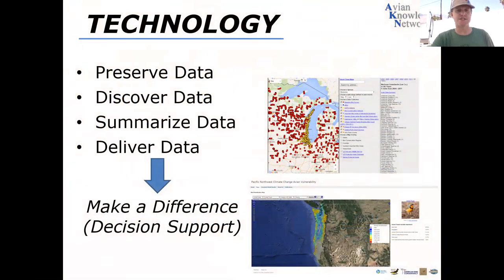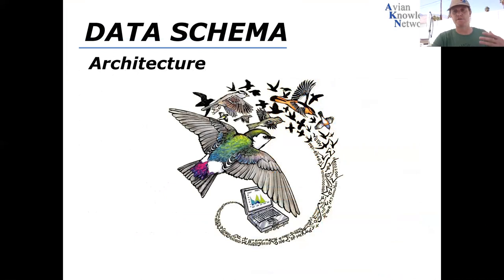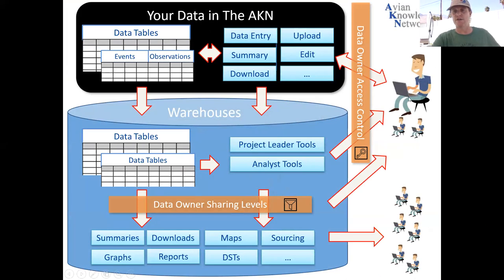There are technologies that we use to preserve the data, allow the data to be discoverable. How can you summarize the data that are in there, and how can we get the data into your planning, into your reports, into your hands so they can be used to make a decision — to make a difference in natural resource management. The architecture involves the data owner who interacts with the data management and project leader aspects of the database. KBO is doing the data management, but we want to make sure you have access to the data through the tools.